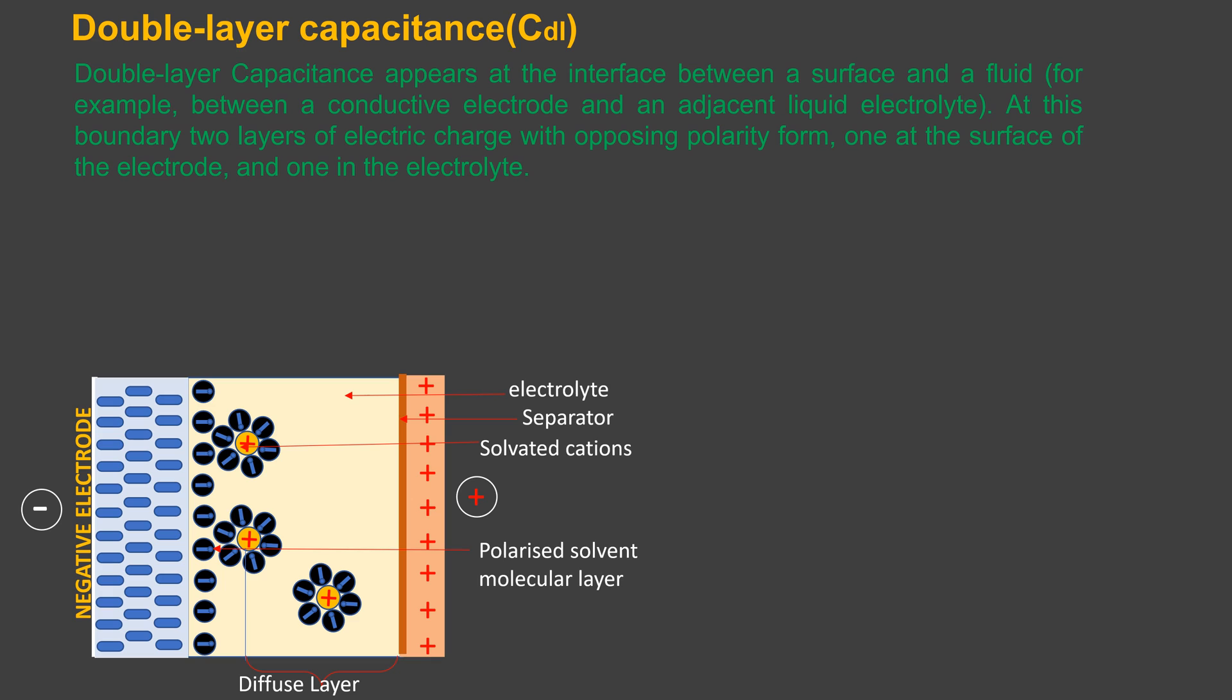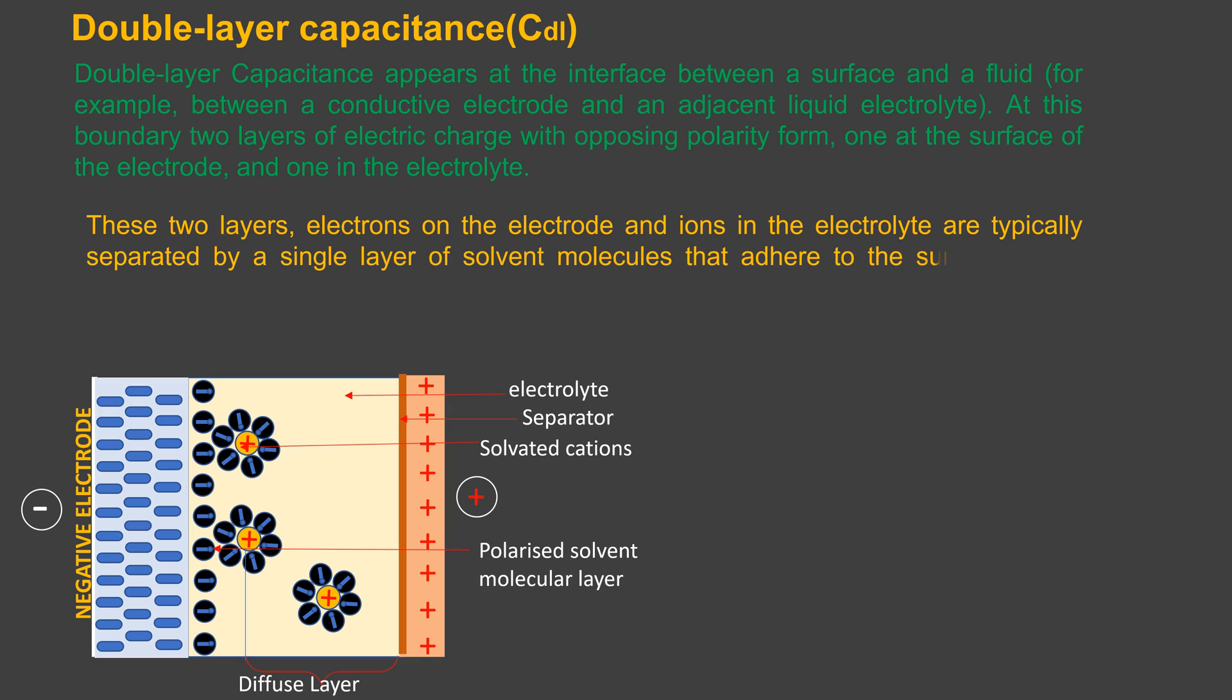These two layers—electrons on the electrode and ions in the electrolyte—are typically separated by a single layer of solvent molecules that adhere to the surface of the electrode and act like a dielectric in a conventional capacitor.